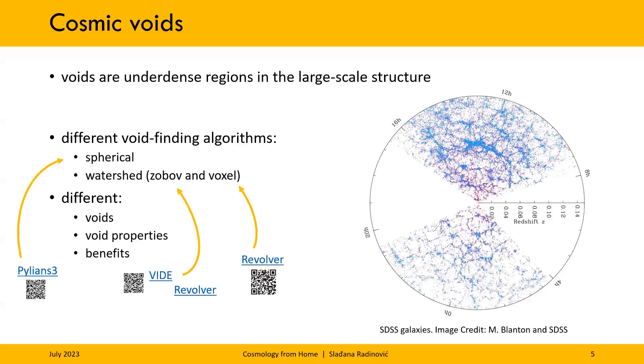Different void-finding algorithms go about this in different ways. Here there's several commonly used void-finding algorithms that all technically approach the task in a different way and find different underdense objects, and these objects have different properties and they're beneficial in different situations. If you want to check out any of these, you can find them at the QR codes that are provided.